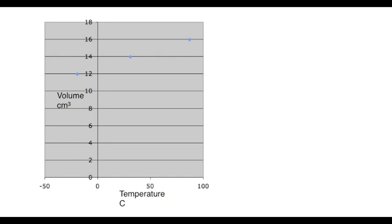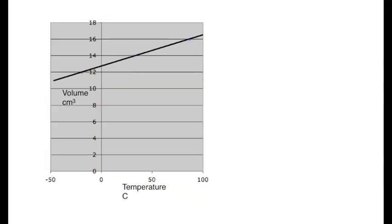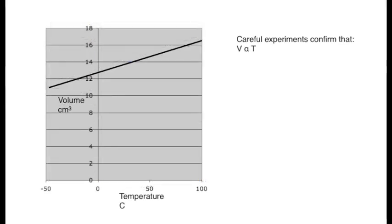Graphing these three pairs of results, they fall neatly into a straight line. This direct proportionality between volume and temperature is Charles' law.